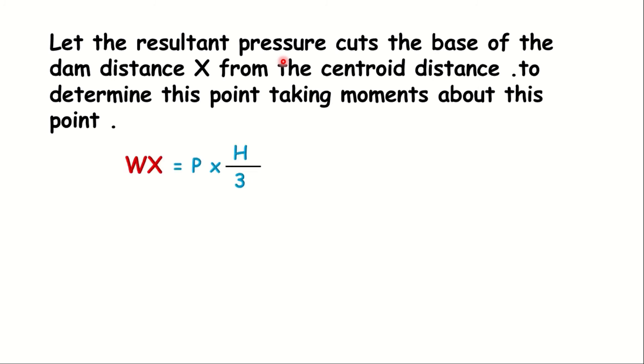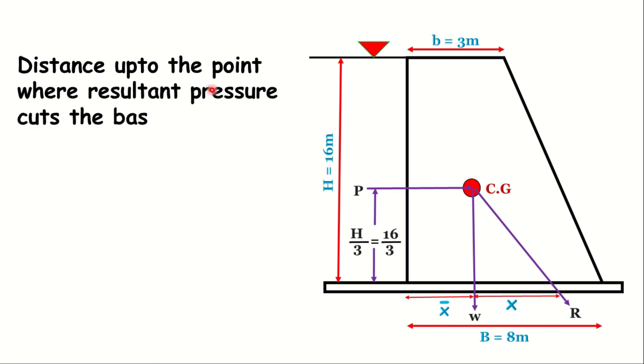For distance x: x = (P/W) × (H/3) = (1153.2/2024) × (16/3) = 3.04 meters.